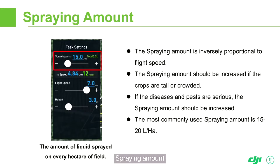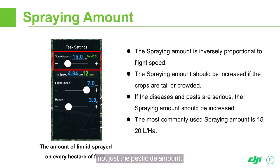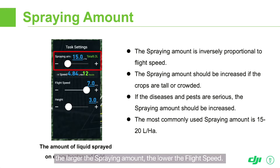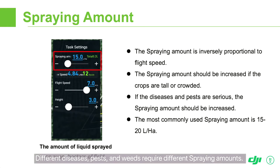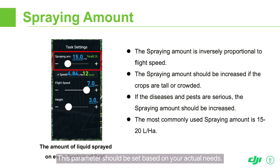Spraying amount is the amount of mixture sprayed on a certain area. The amount refers to the mixture of pesticide and water, not just the pesticide amount. As the drone has a maximum spraying speed, the larger the spraying amount, the lower the flight speed. Different diseases, pests, and weeds require different spraying amounts. Generally, short crops and preventative operations require low spraying amounts, while leafy crops like trees and weeding operations require higher spraying amounts. This parameter should be set based on your actual needs.